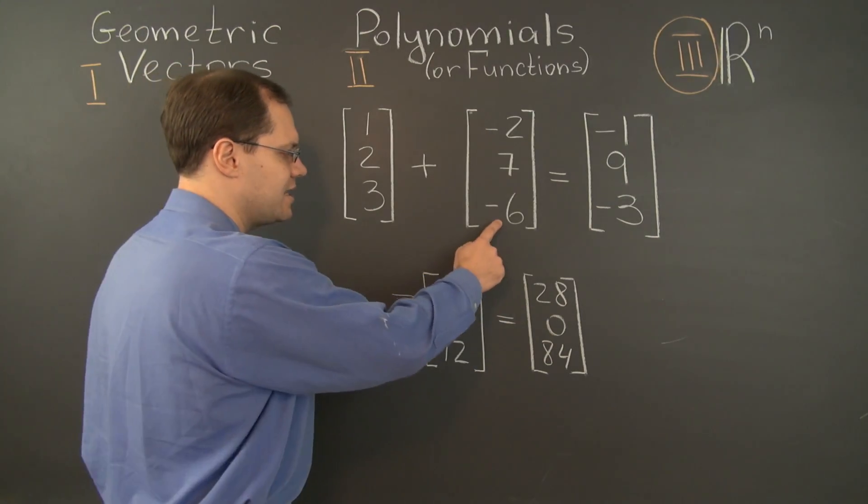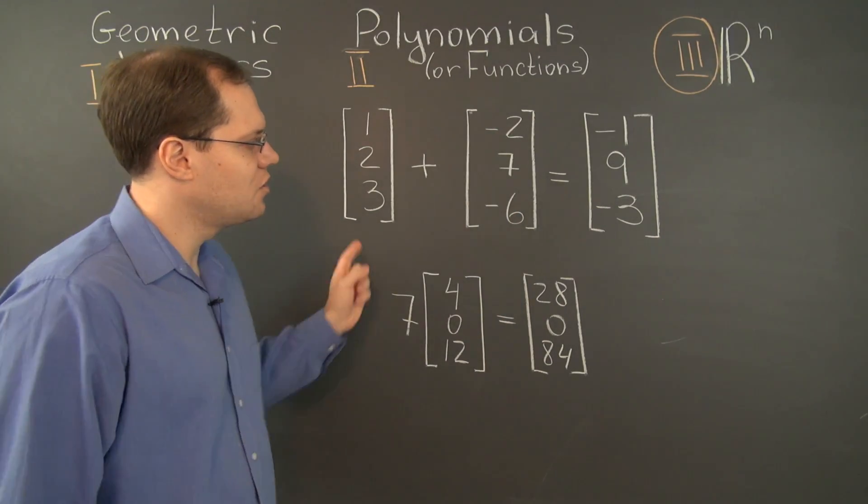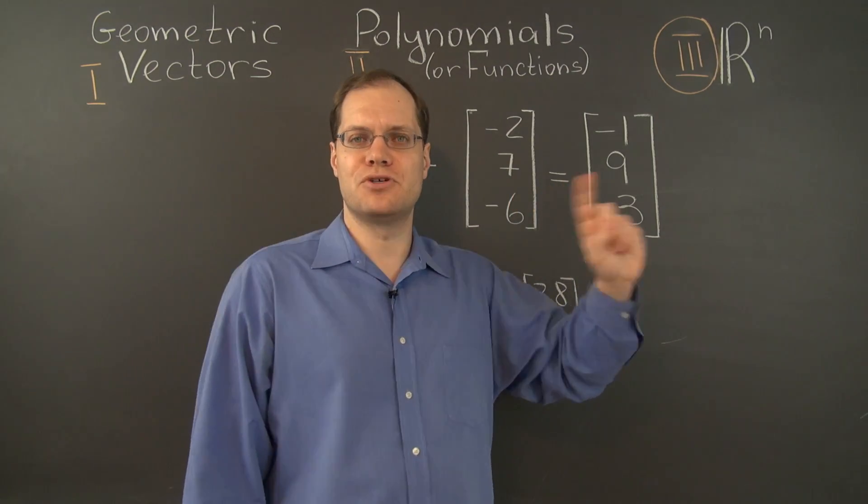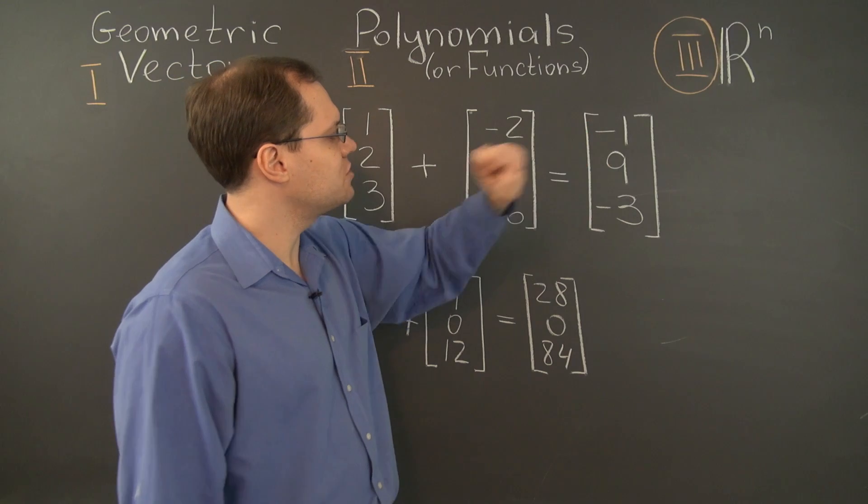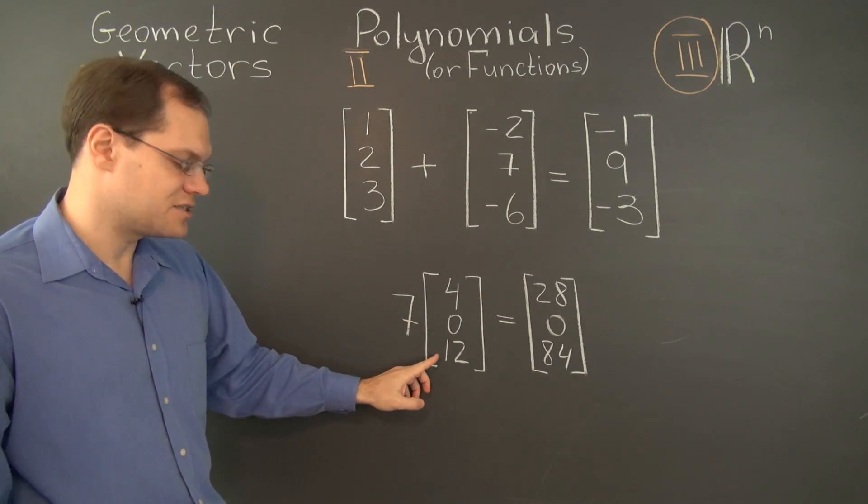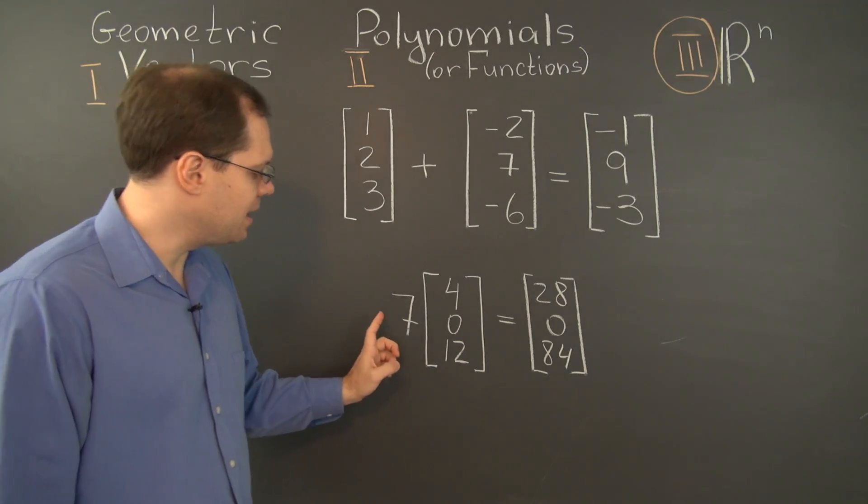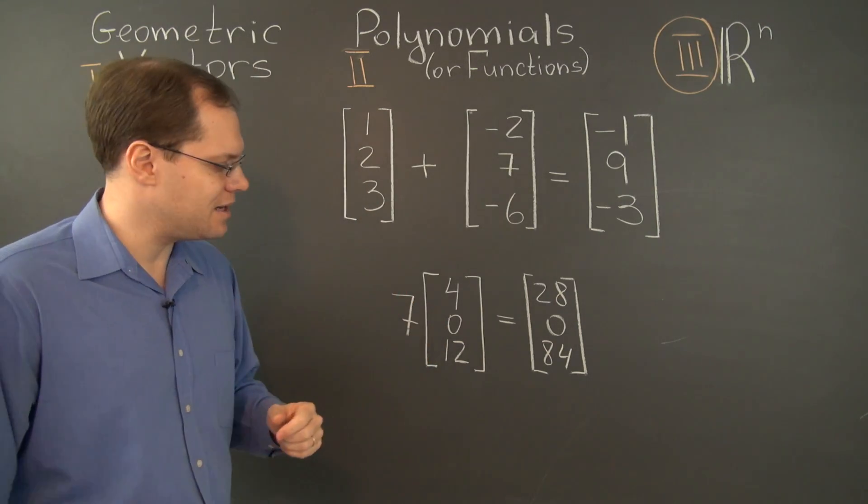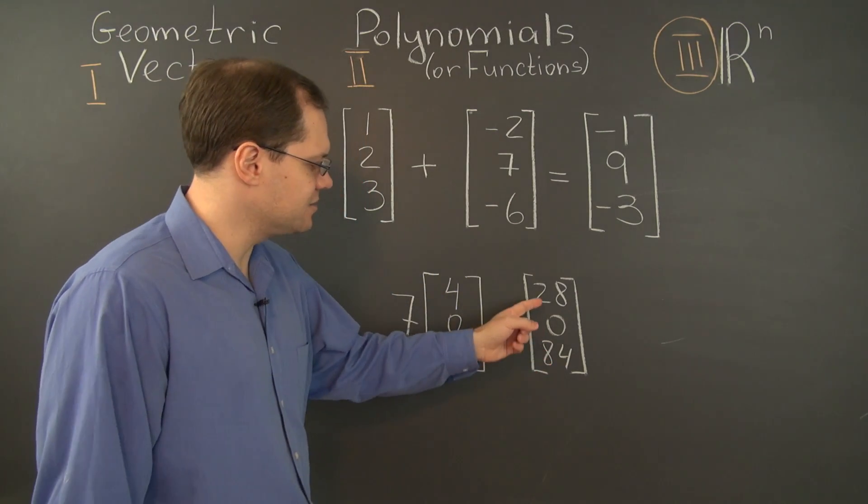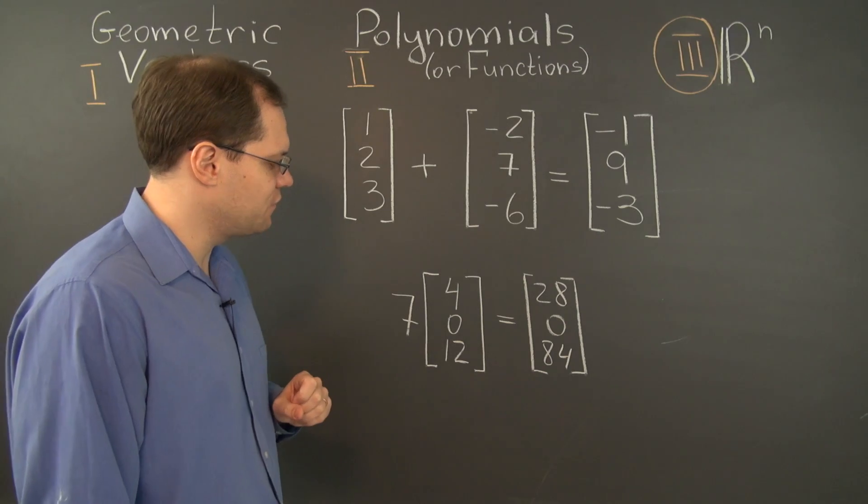That property is that the last entry is three times the first entry. When we added the vectors together, that property was preserved. When we multiplied this vector by a number, the result was another vector where the last entry was three times the first entry.